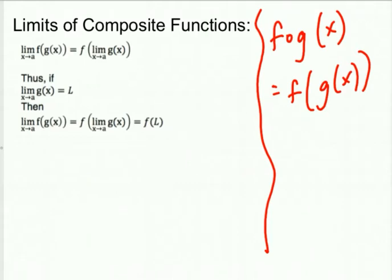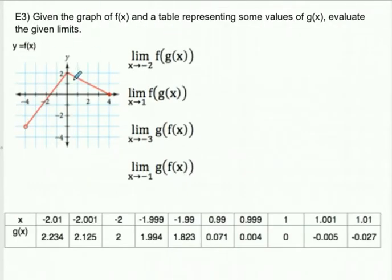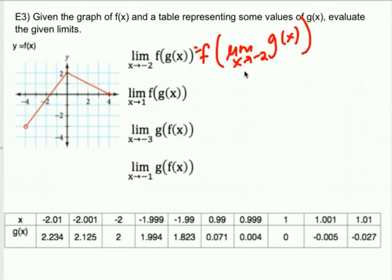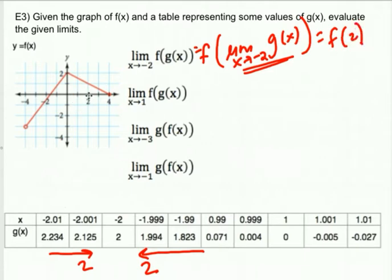We're given the same graph. This is F of the limit as X approaches negative two of G of X. As X approaches negative two from both sides on the table, we seem to approach a value of two. So this is just F of 2. When I look at F of 2 on the graph, it's a 1 — that's just an algebra evaluation, F of 2 is 1.